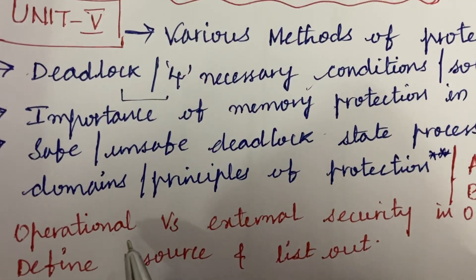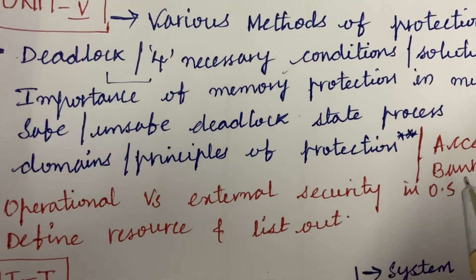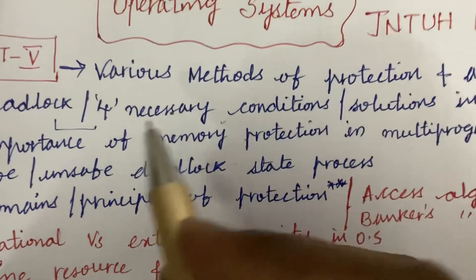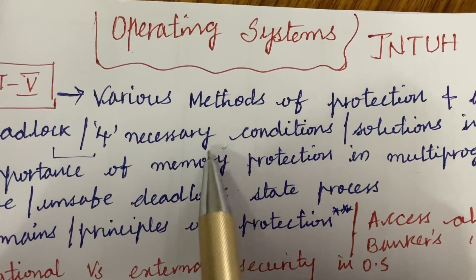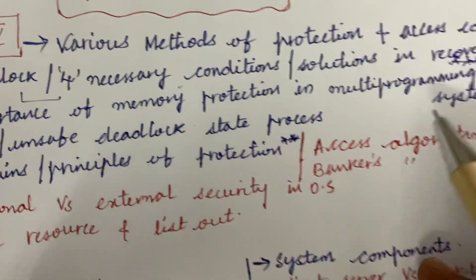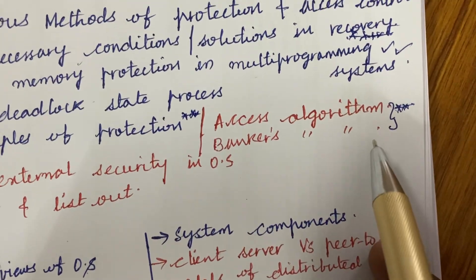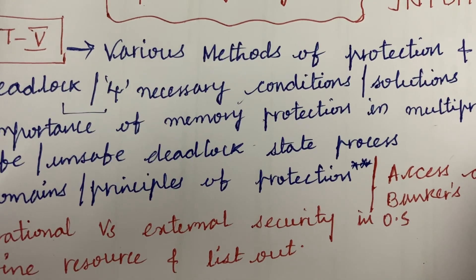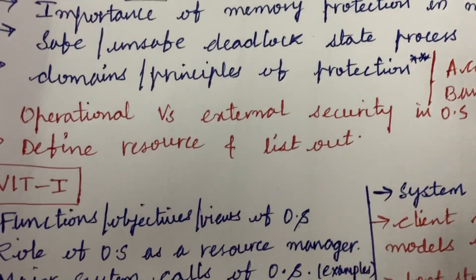The access algorithm as well as bankers algorithm of which we'll be getting one question from this concept, and operational versus external security, define resource and list out its types. From this part you are going to get 15 mark questions, 8A as well as 8B.